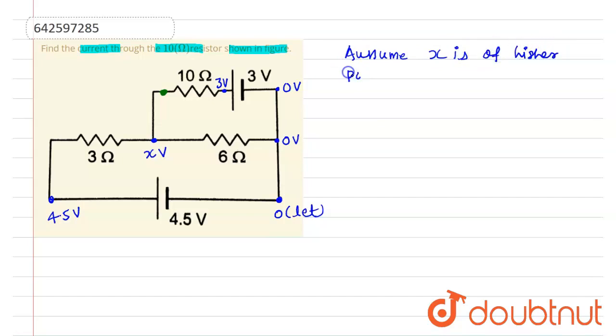Now apply Kirchhoff's junction law or current law at the given node.